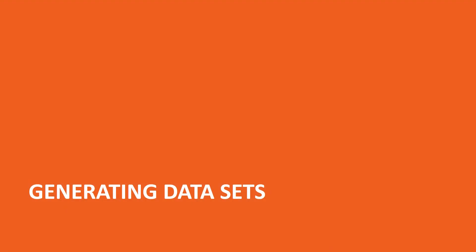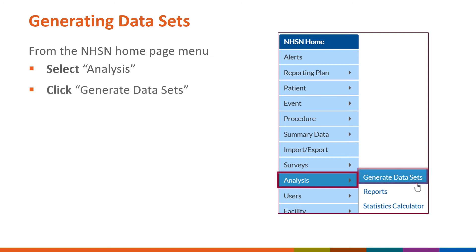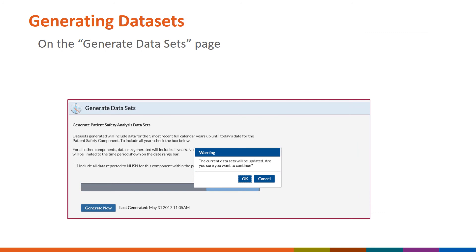In the second part of this video, we will go over how to generate data sets in NHSN. To generate data sets, select Analysis and then Generate Data Sets from the NHSN homepage menu. Please note that on the Generate Data Set screen, you may either see Not Generated or a date and time next to Last Generated. Once on the Generate Data Sets page, click on the Generate New button to get started.